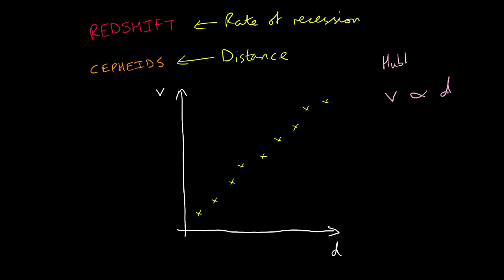This is known as Hubble's law. The gradient of this line is known as the Hubble constant. Therefore, we can write the equation as velocity V is equal to the Hubble constant H₀ multiplied by the distance D.